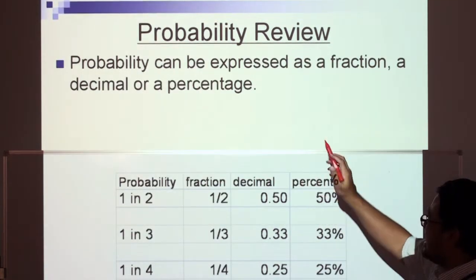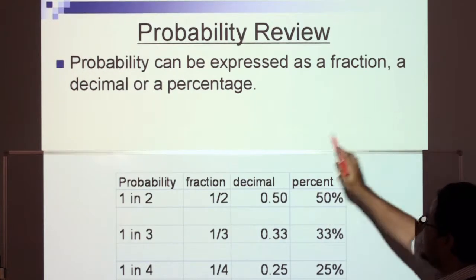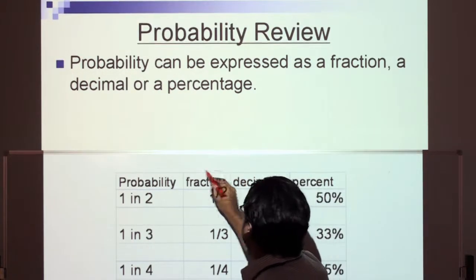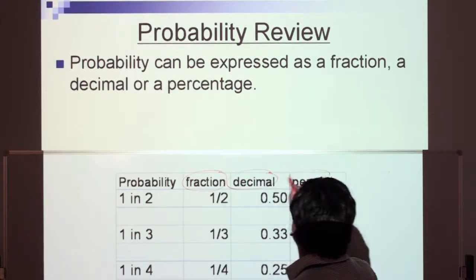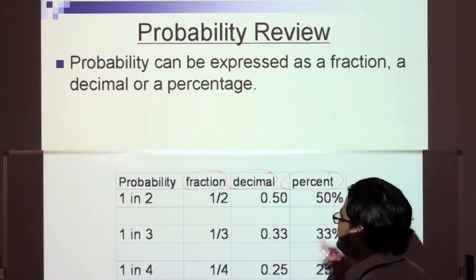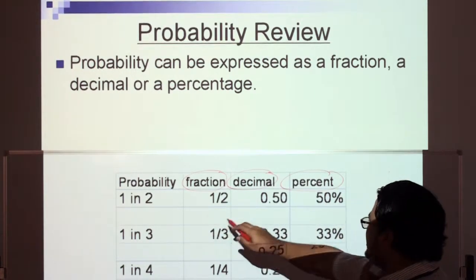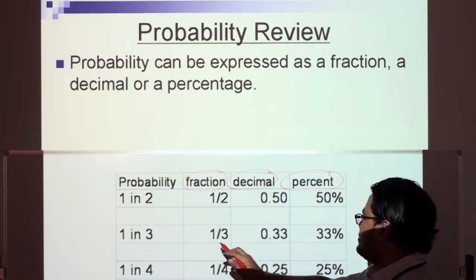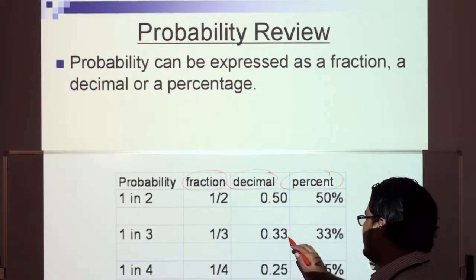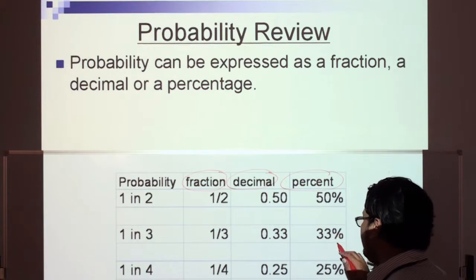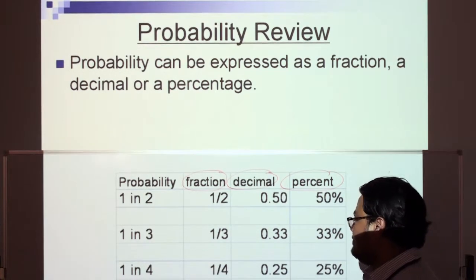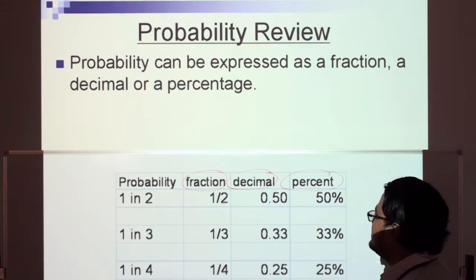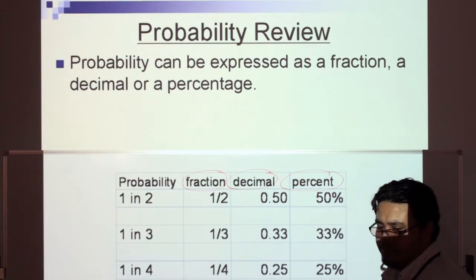Probability can be expressed as a fraction, a decimal, or a percentage. One in two: one half, 0.5, 50%. One in three: one third, 0.33, 33%. One in four: one quarter, 0.25, 25%.